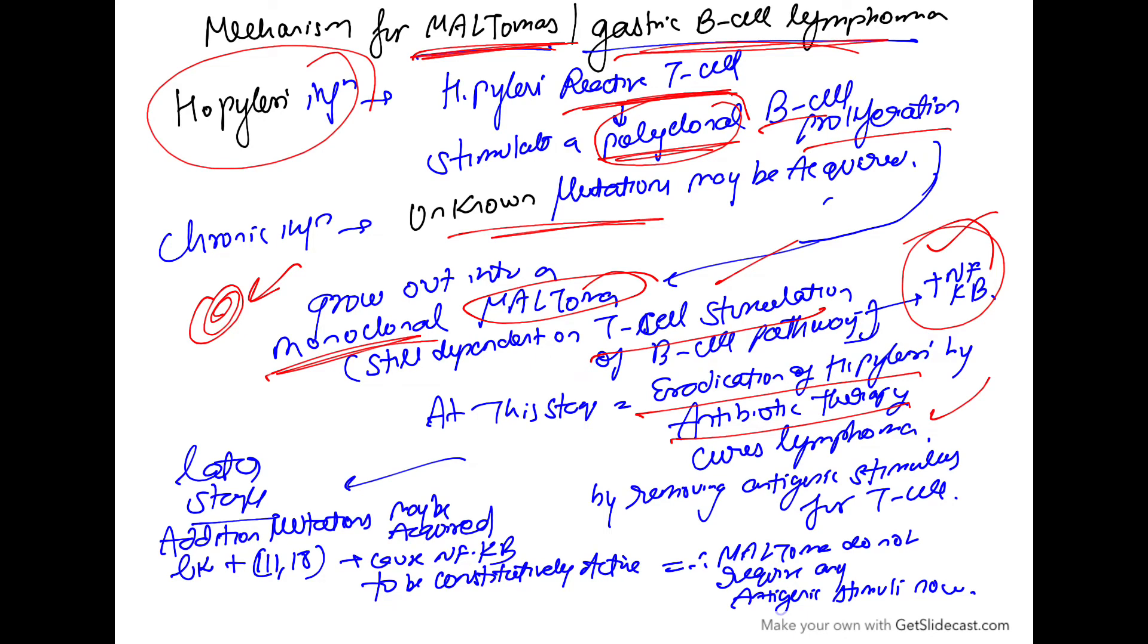which is the stimulus for T cells. So, the stimulus is removed, the antigen is removed. So, there will be no continuous stimulation by the T cells to the B cells. So, this will stop and this will die.